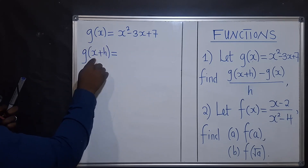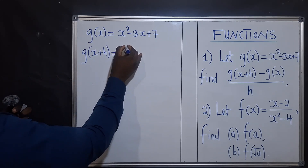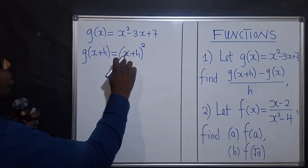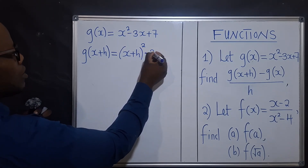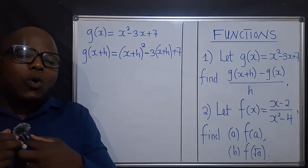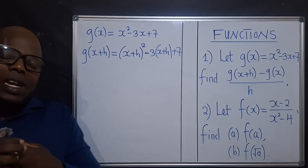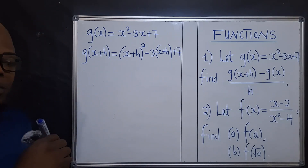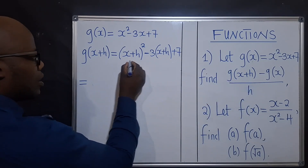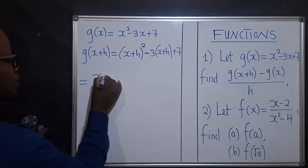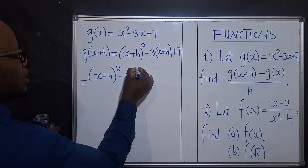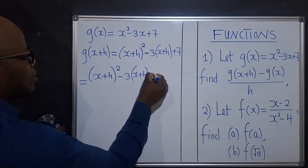So look at this — this is x, but what has been put here is x plus h, meaning we're going to write x plus h, power 2. So in place of x here, we'll put x plus h, minus 3 times x plus h, plus 7.